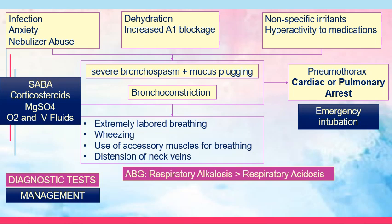In status asthmaticus, instead of oral prednisone, we opt immediately for IV methylprednisolone. Magnesium sulfate is also given as it can relax the airways — it is a smooth muscle relaxant and a calcium antagonist. However, magnesium is a high-alert medication. Orient the patient that there may be facial warmth, flushing, tingling, and nausea upon administration. As nurses, we must watch for CNS depression, respiratory depression, and hypotension. Check deep tendon reflexes, urine output, and respiratory rate before and during administration.